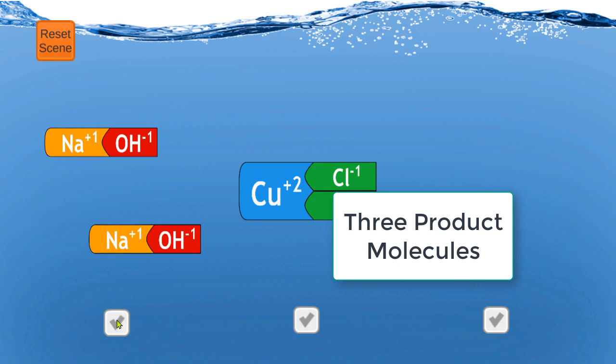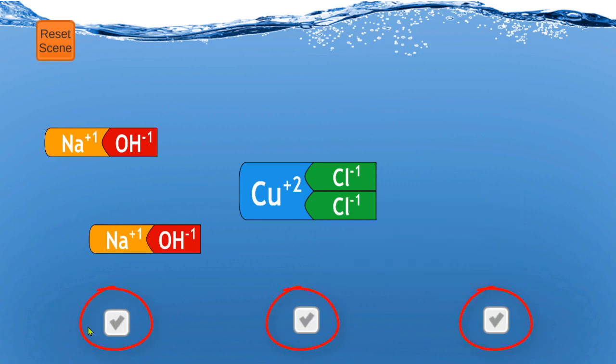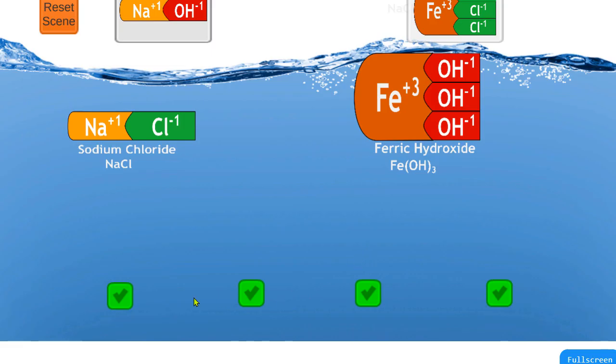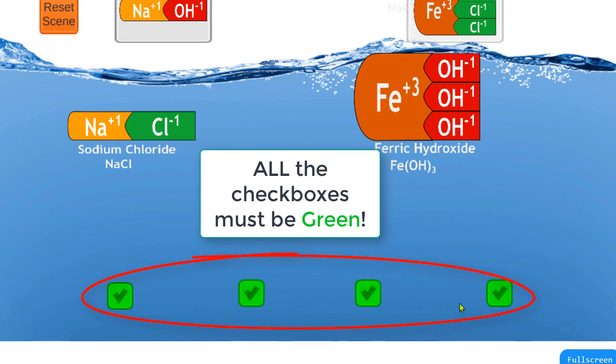This particular scene has three products to make and there's these checkboxes down below. If you make the right thing, it'll turn green. You've seen that strategy before. You're not done until all the checkboxes are green and you'll hear some applause.